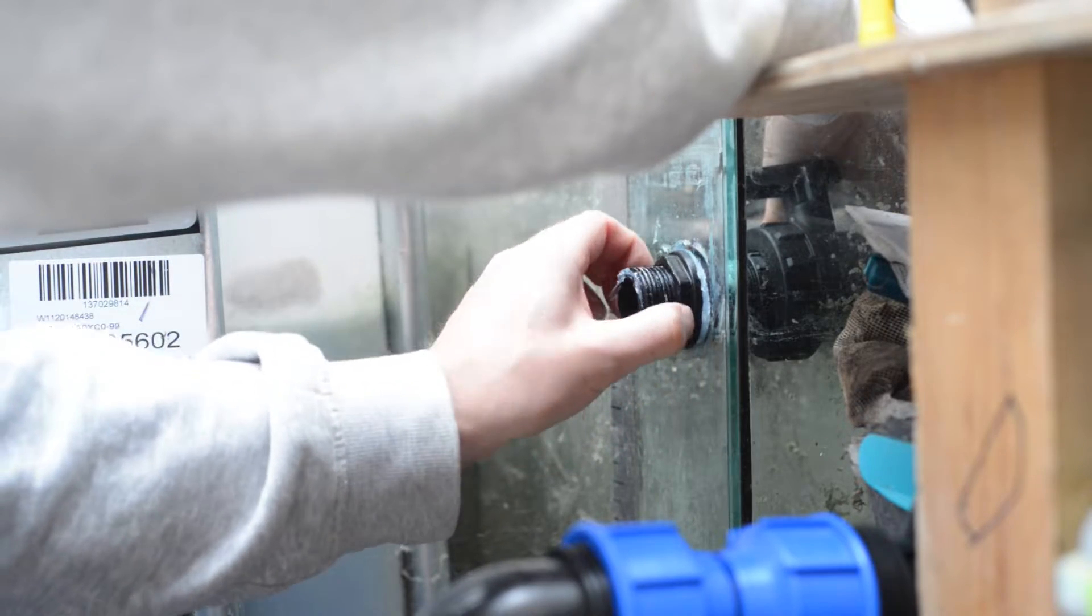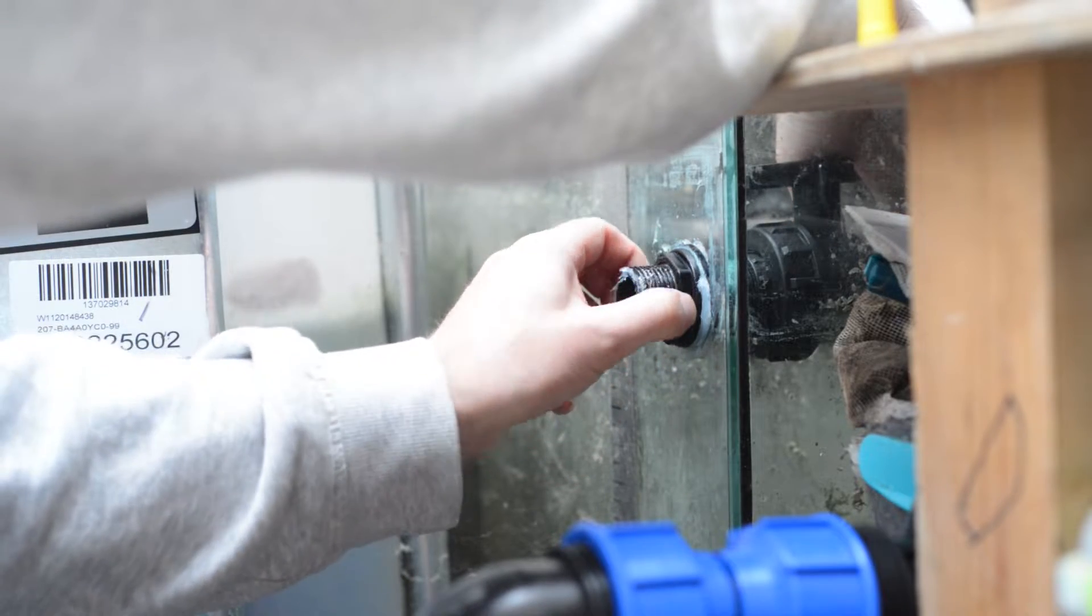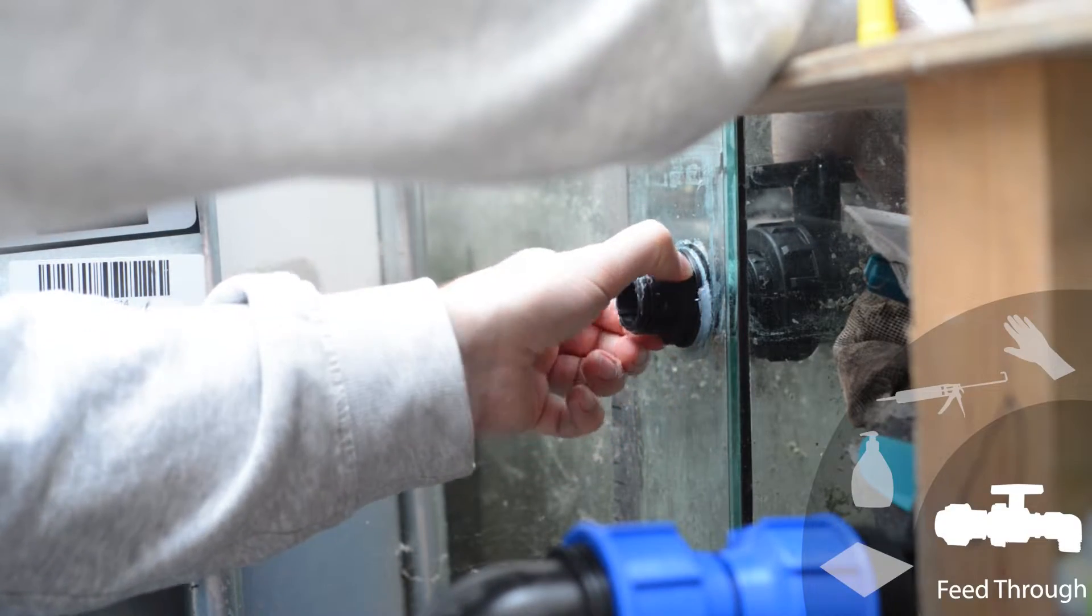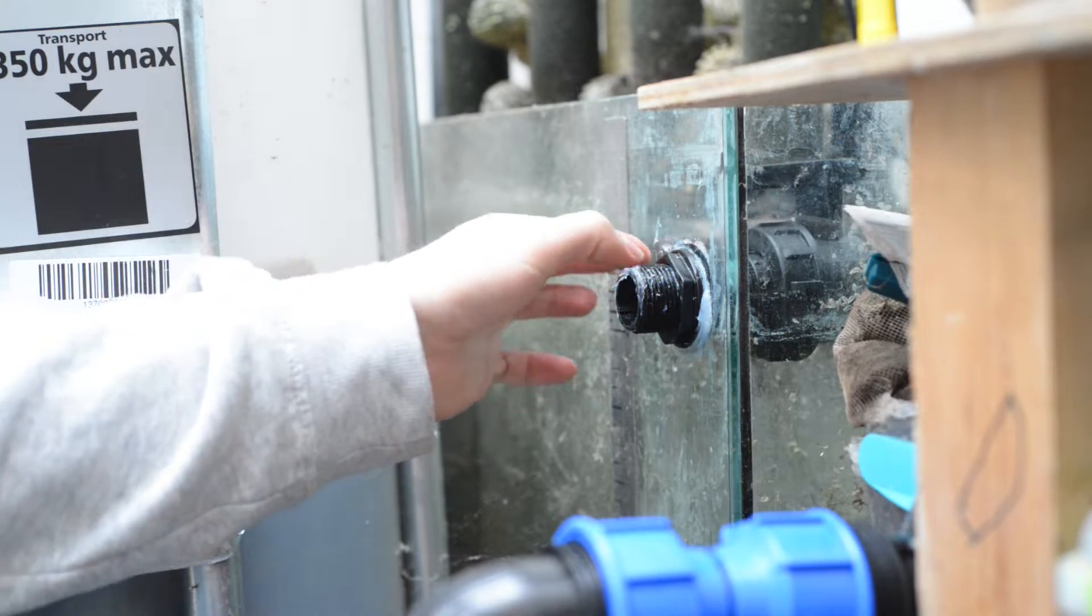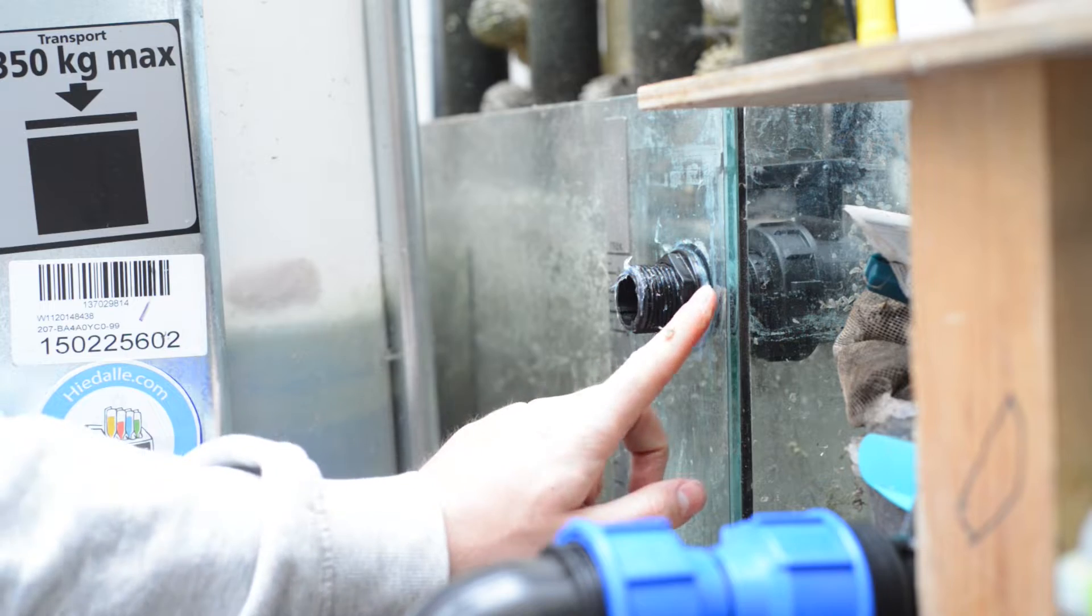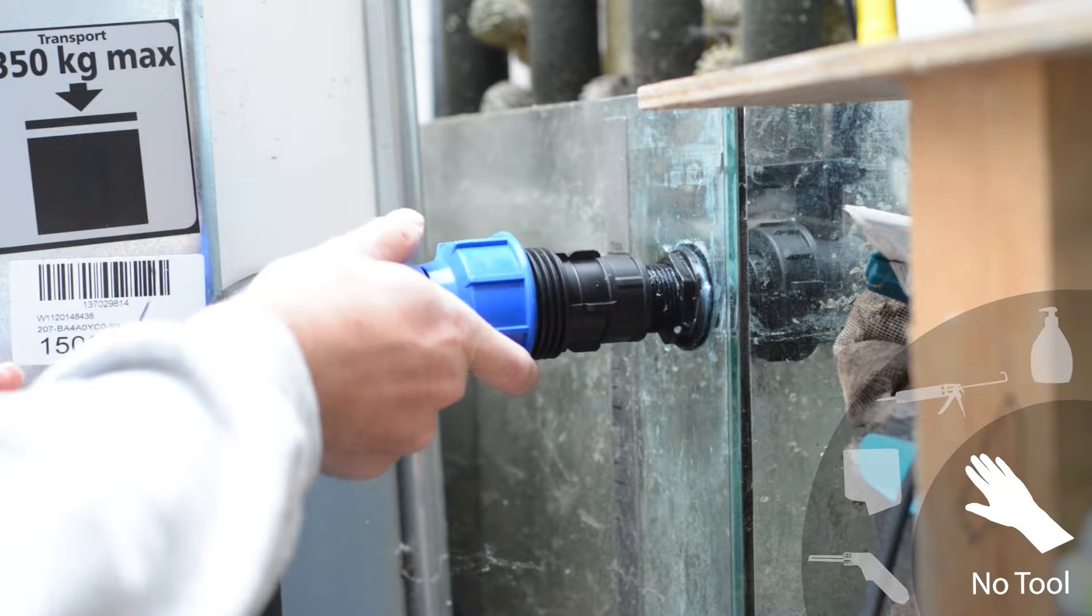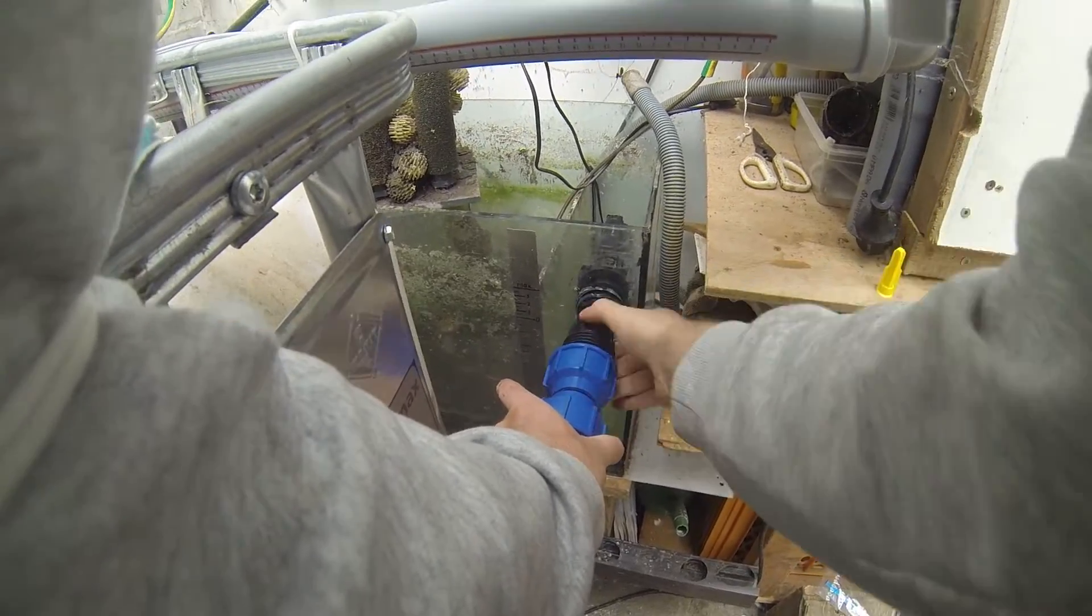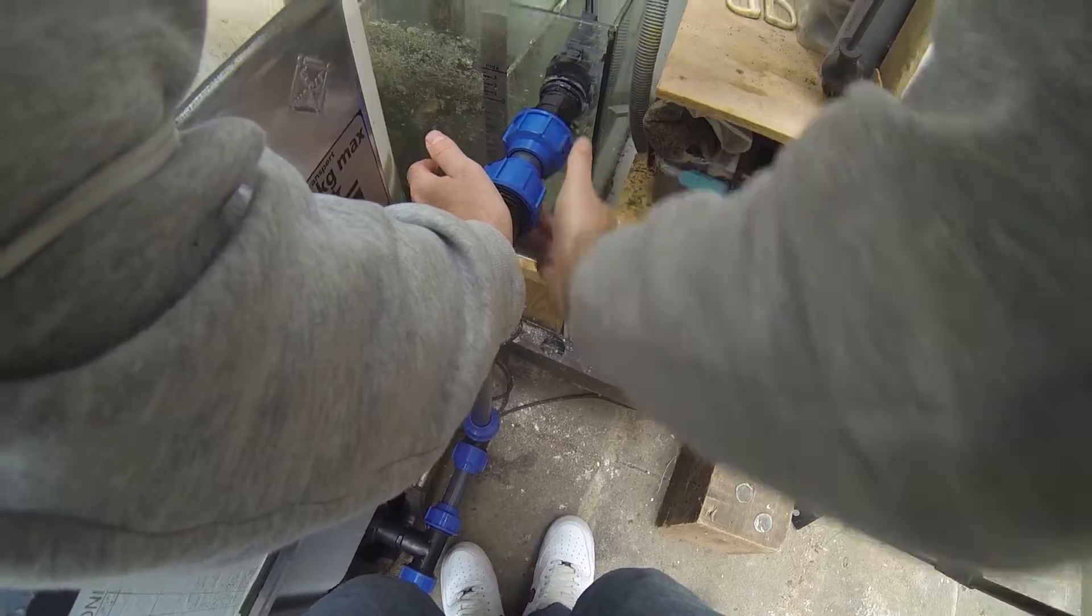Some of the silicone sticks to the thread of the feed-through but this does not really matter since it will just cure inside of the thread creating an additional seal here. Once this is done you can use some liquid soap to smoothen the silicone with your finger but usually you will get some on your hand anyway. I will just screw the fitting back on now with the silicone still flexible. It can then cure assembled and what's this? A spider!